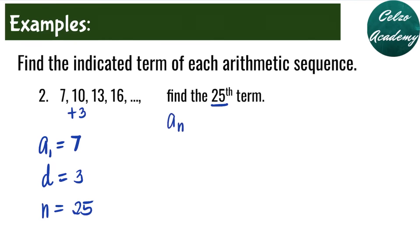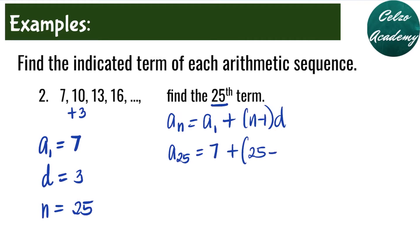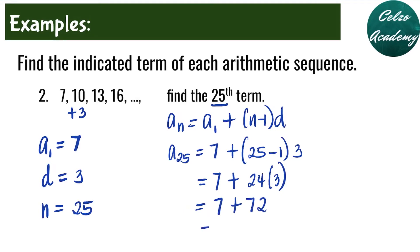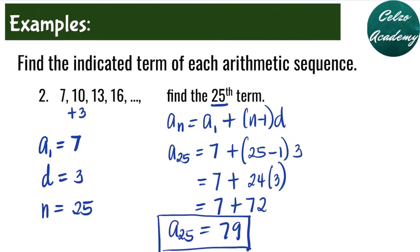Again, the formula for an arithmetic sequence is a sub n is equal to a sub 1 plus n minus 1 times d. We are solving for the 25th term, so that is a sub 25. Our a sub 1 is 7, plus n is 25 minus 1, times the common difference of 3. Simplifying: 7 plus 24 times 3 equals 7 plus 72, which equals 79. So the 25th term in this arithmetic sequence is 79.